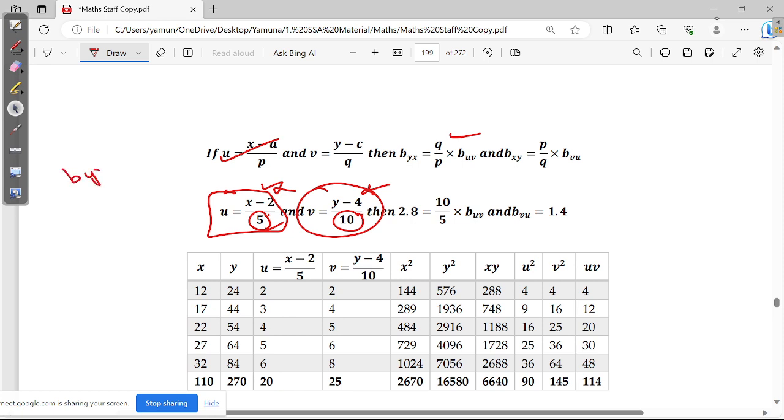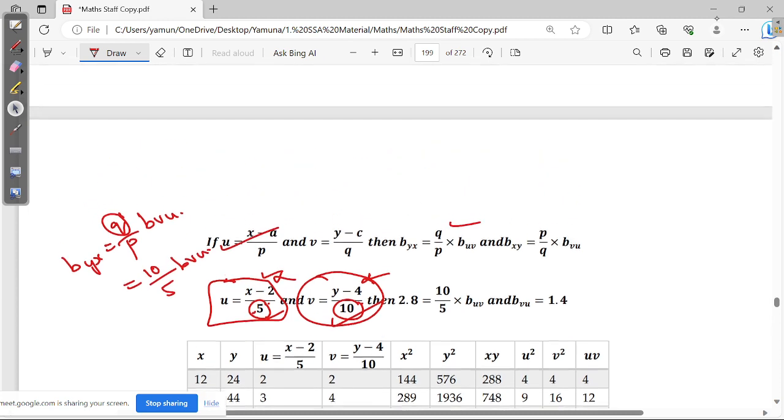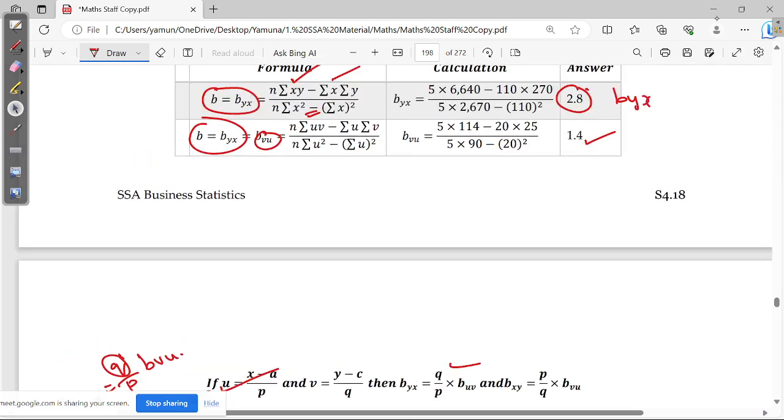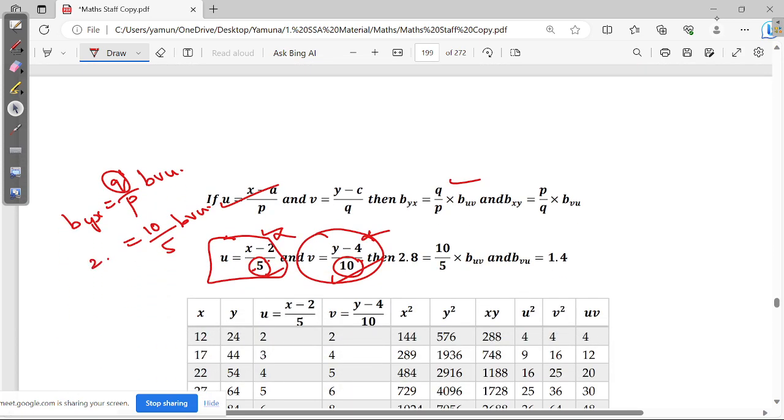Now you need not worry about the origin. You just take only about the scale values. My value of this BYX will be Q by P of BVU. This Q is the 10 value. So 10 divided by 5 is 2 times of BVU. BYX is 2.8. So substitute over here. 2.8 equals 10 by 5 into BVU. So this is 1.4.